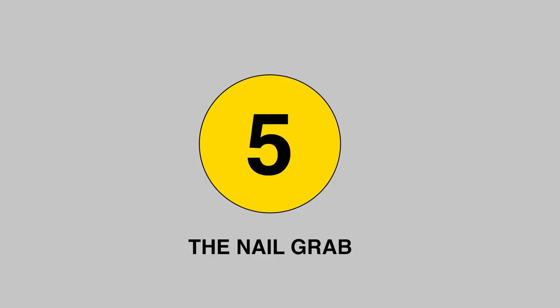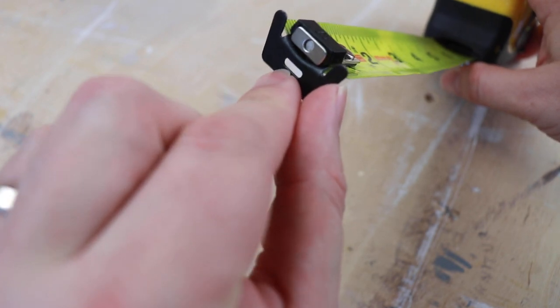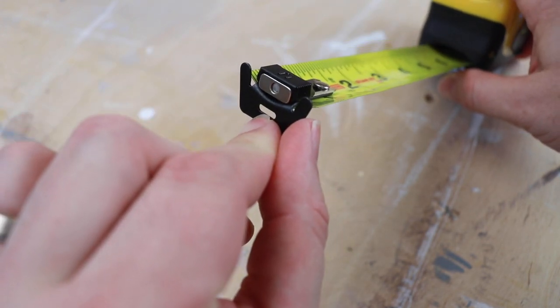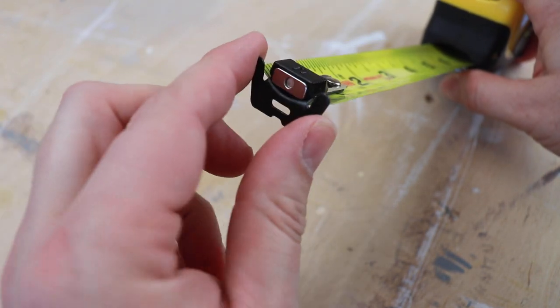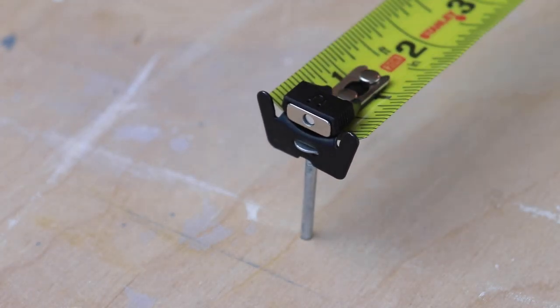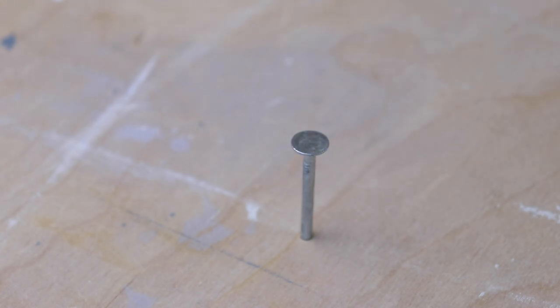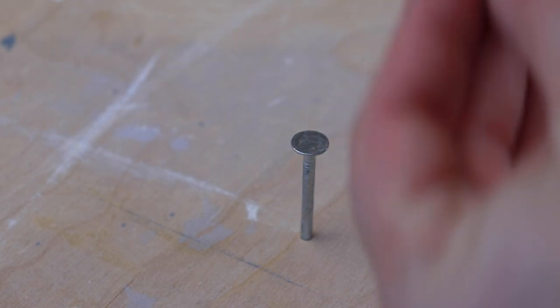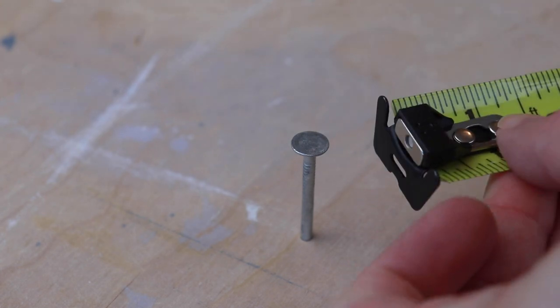Number 5: The nail grab. The nail grab is on nearly every measuring tape. You'll find a small slot at the end of the hook. This is there to grab onto the end of a nail or a screw. This way, if you're measuring a flat surface and you don't have anyone to hold the other end of the tape, all you need is a hammer and a nail or a screw.